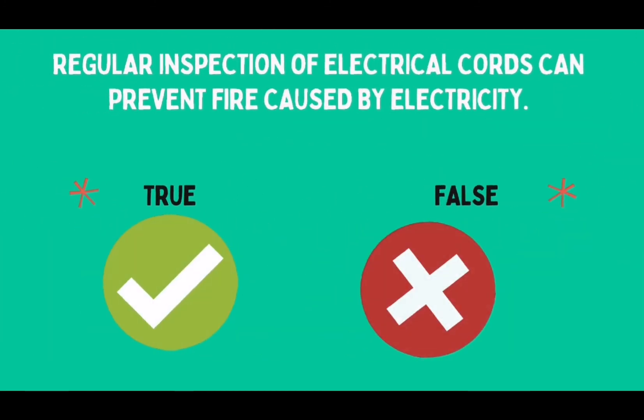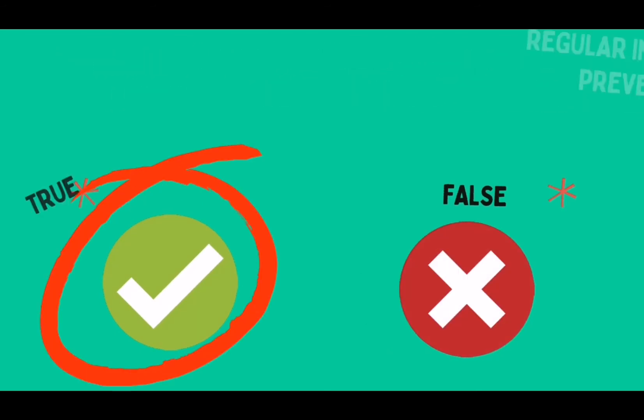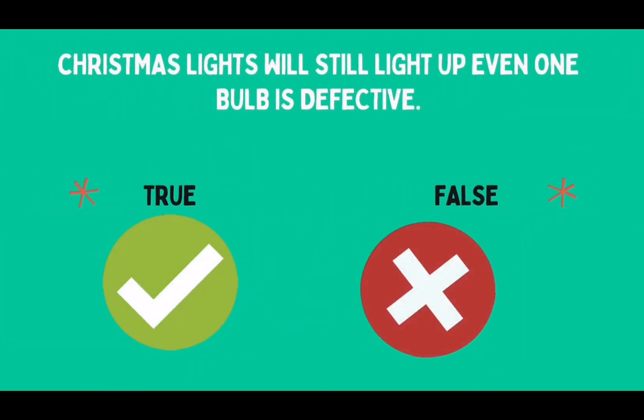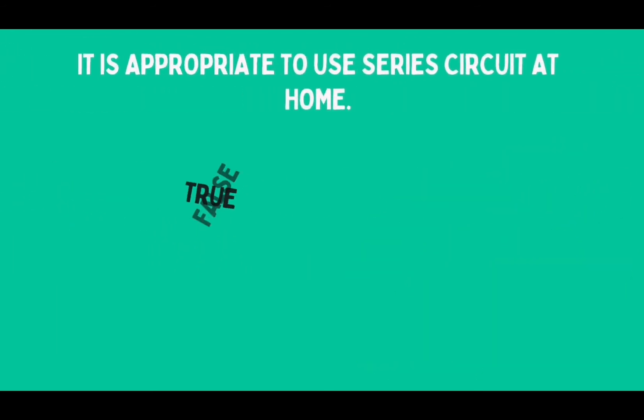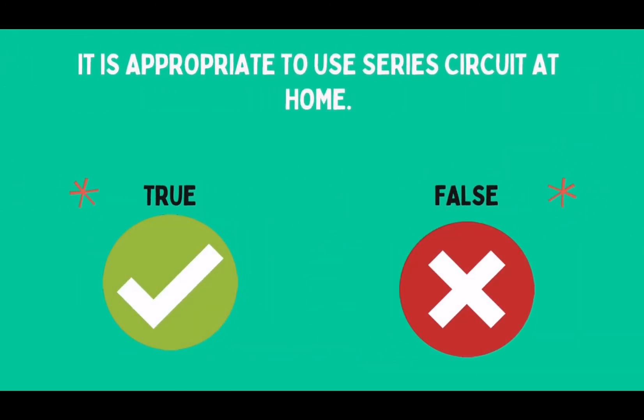Regular inspection of electrical cords can prevent fire caused by electricity. Christmas lights will still light up even one bulb is defective. It is appropriate to use series circuit at home.